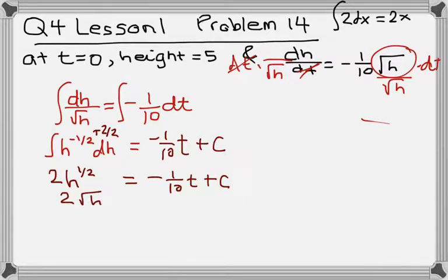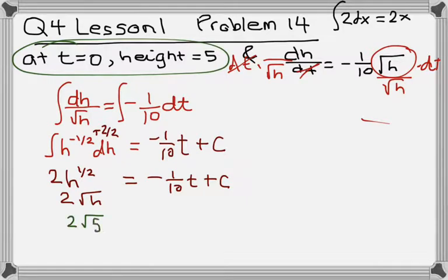So the next step was to plug in the initial condition in order to find the plus C. The initial condition is given right there. It says at time t is 0 seconds, the height of the water is 5 feet. So we know the height is 5, so this is 2 root 5 equals, and then the t is 0, so this is 0. So basically, our C is equal to 2 root 5. And again, that's because I plug in 0 into this, so that just goes away, so you just get equal C. So this is our C.